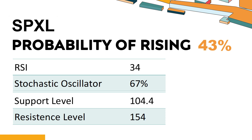When the stochastic oscillator stays between 50 and 80, it may indicate that the stock is experiencing a mild downtrend with some selling pressure. In this case, an oversold signal could indicate a potential buying opportunity. SPXL has a 43% probability of rising stock price. Combining multiple technical analysis indicators, SPXL has three bullish signals and four bearish signals.